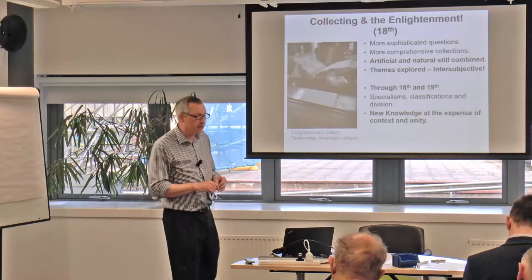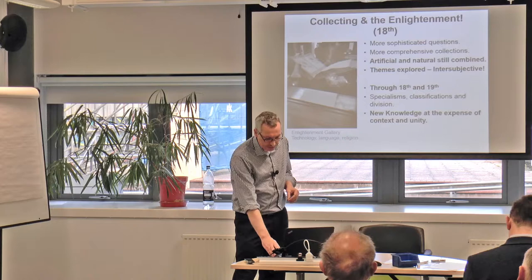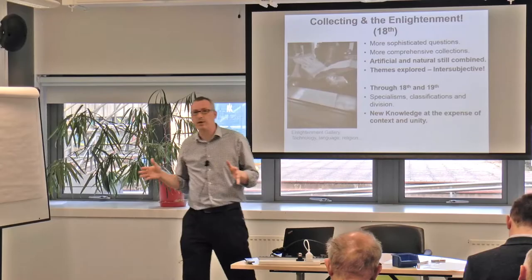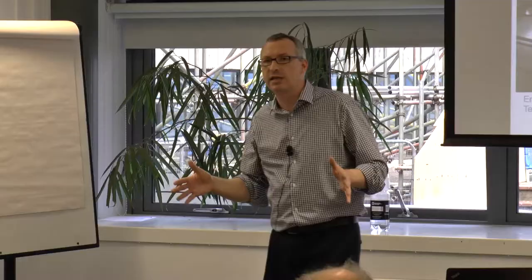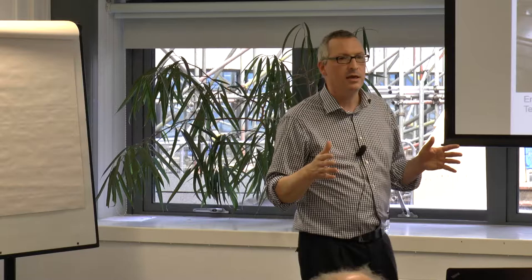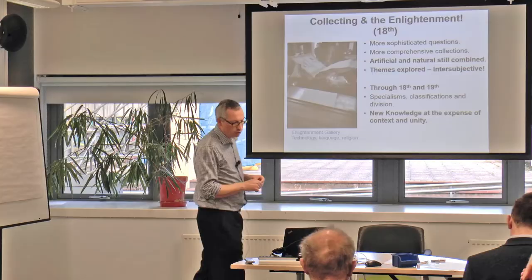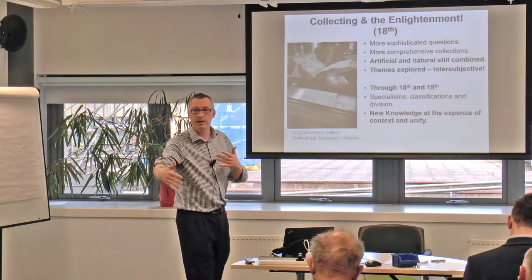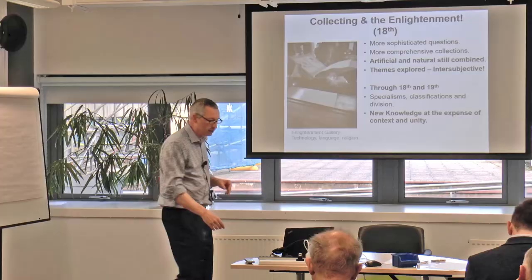As we go through the 18th and 19th centuries, we become more sophisticated in how we look at collections. They become more specialized, classification systems become more scientific, and collections start to split off. You get the South Kensington Museums, the National Gallery, etc., each with their own classification systems. The sense of unity from the Wunderkammer starts to disappear, and knowledge representation across natural and artificial objects becomes separated.